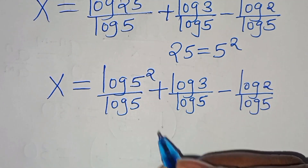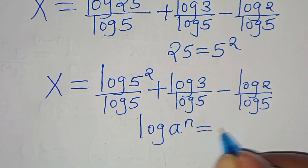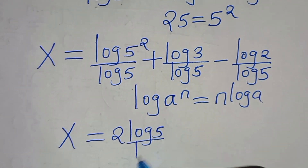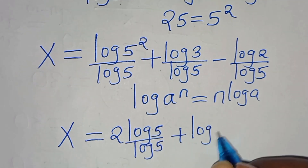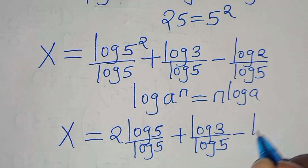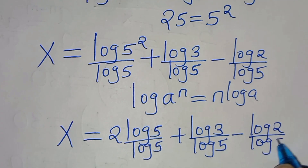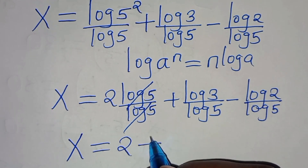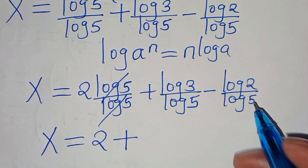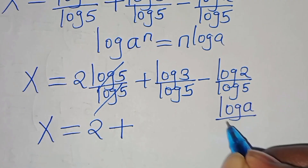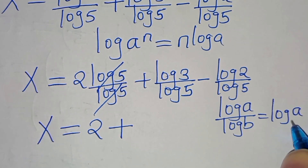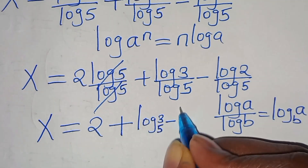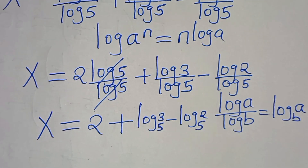Applying the power-log property — log(a^n) = n·log(a) — log(5^2) over log(5) becomes 2·log(5) over log(5), which simplifies to 2. So x equals 2 plus log(3)/log(5) minus log(2)/log(5). Using the change-of-base form, log(3)/log(5) is log base 5 of 3, and log(2)/log(5) is log base 5 of 2. Therefore x = 2 + log₅(3) − log₅(2).